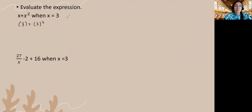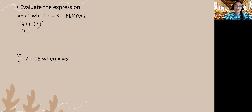Remember order of operations — PEMDAS. We have addition here and an exponent here, so we're going to evaluate the power first before we do the addition. So 3 squared is just two factors of 3, that's 3 times 3, which is 9. And now I can go ahead and do the addition: 3 plus 9 is 12.